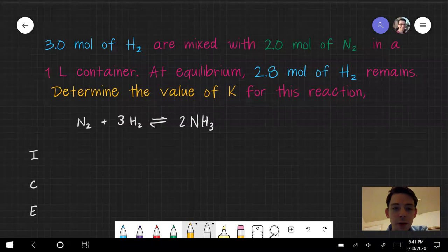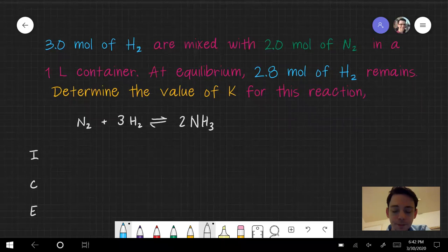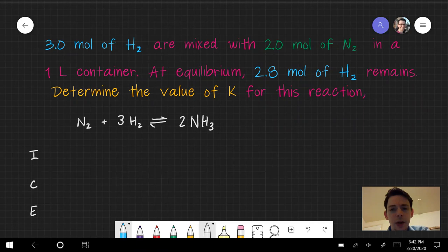This one's a little different because the reaction's a bit more complex, a bit more complicated because it has coefficients in it. So let's see how these coefficients come into play. Here we have three moles of H2 and two moles of N2 in a one liter container, and at equilibrium 2.8 moles of H2 remain. That's actually most of the H2, so it looks like only a little bit of it's reacting. Determine the value of K for this reaction.